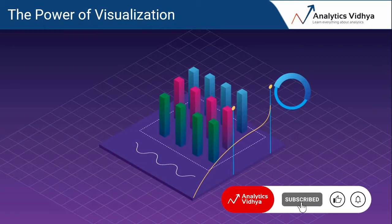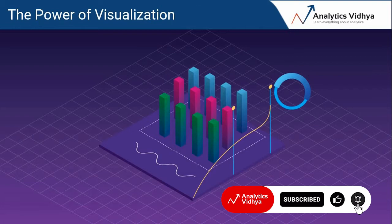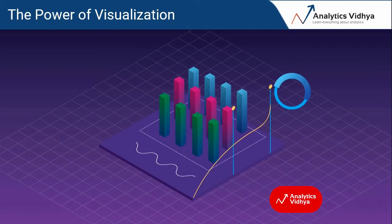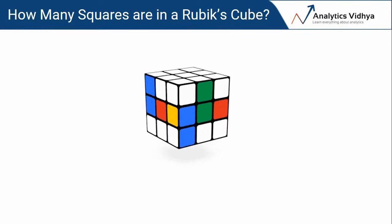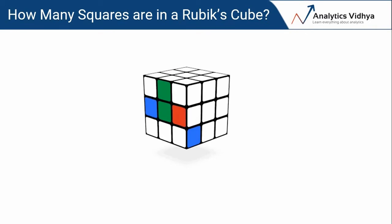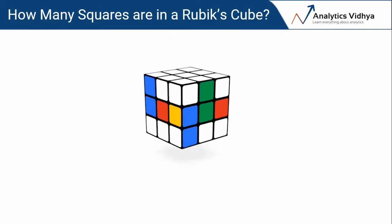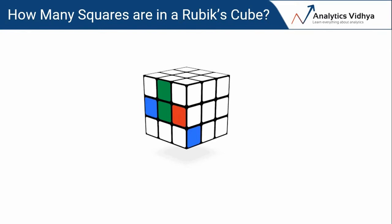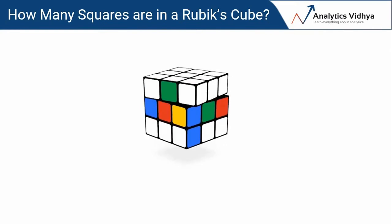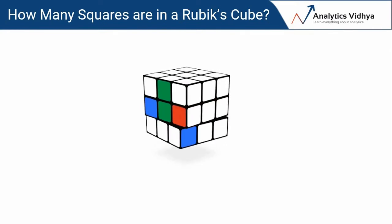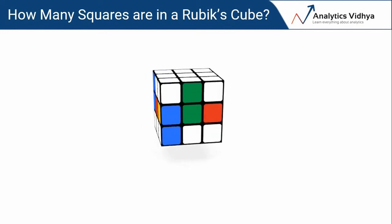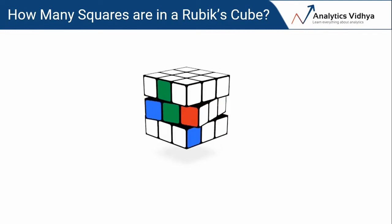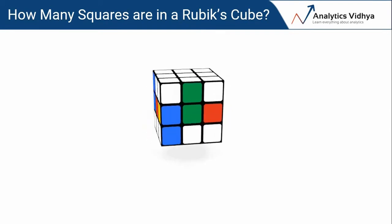Let's begin with an exercise — one of my favorite things to get the mind jogging before I dive into the nitty-gritty of why we're here. Have you seen a Rubik's cube before? It's a puzzle in the form of a plastic cube covered with multi-colored squares. The aim is to twist and turn those squares so all the squares on each face are the same color. But that's not our aim right now. My question to you is: how many squares are there in a Rubik's cube? Can you guess that in less than 10 seconds?